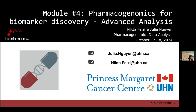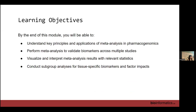For Module 4, we will be mostly talking about meta-analysis. The learning objectives for this module are to understand the key principles and applications of meta-analysis in pharmacogenomics. We will do meta-analysis to validate biomarkers across multiple studies, then visualize and interpret the results. We also have a subgroup analysis across tissues and datasets. And Julia has added a section about AI and the mostly used models in pharmacogenomics.